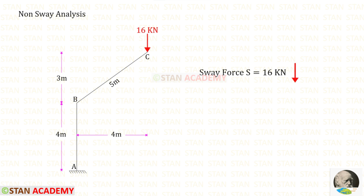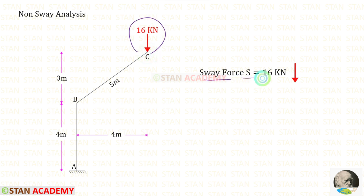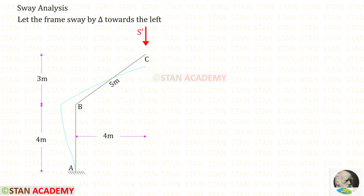In this frame, except this load, there is no other load. So we can take this load as the sway force S. Now let us start the sway analysis. From joint B, let us make the frame sway by delta towards the left.